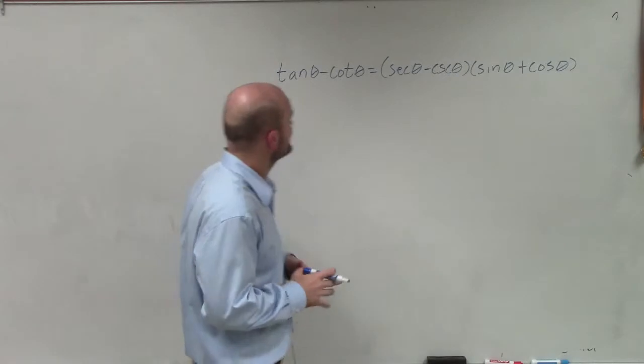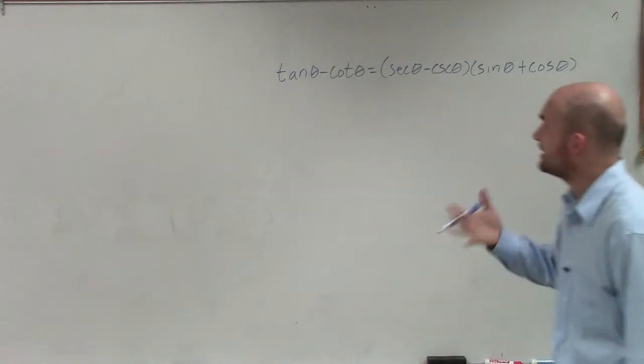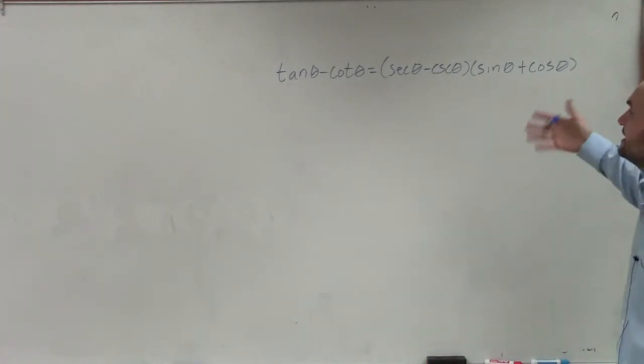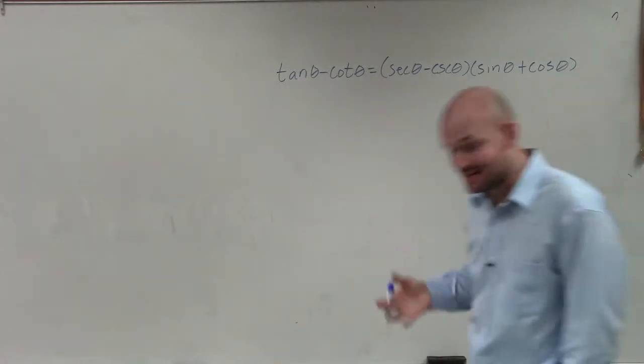Welcome. All right, so in this case, ladies and gentlemen, I have tangent of theta minus cotangent of theta equals secant of theta minus cosecant of theta times sine of theta plus cosine of theta.